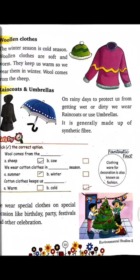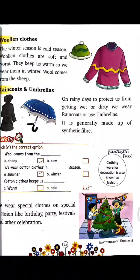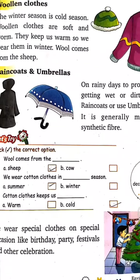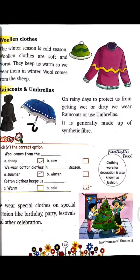Rain coats and umbrellas. On rainy days, to protect us from getting wet or dirty, we wear rain coats or use umbrellas. They are generally made up of synthetic fibers. We use rain coats and umbrellas to protect ourselves when it is raining.